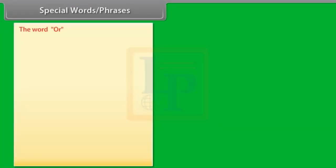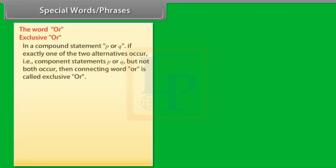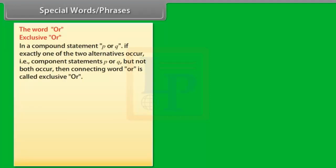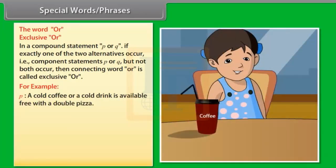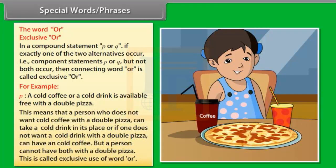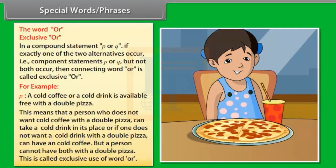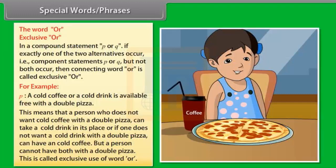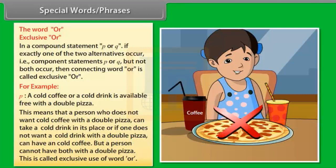The word OR — Exclusive OR. In a compound statement P or Q, if exactly one of the two alternatives occurs — that is, component statement P or Q, but not both — then the connecting word OR is called exclusive OR. For example, P is the statement 'A cold coffee or a cold drink is available free with a double pizza.' This means a person can have a cold coffee or a cold drink, but cannot have both with a double pizza. This is called exclusive use of OR.